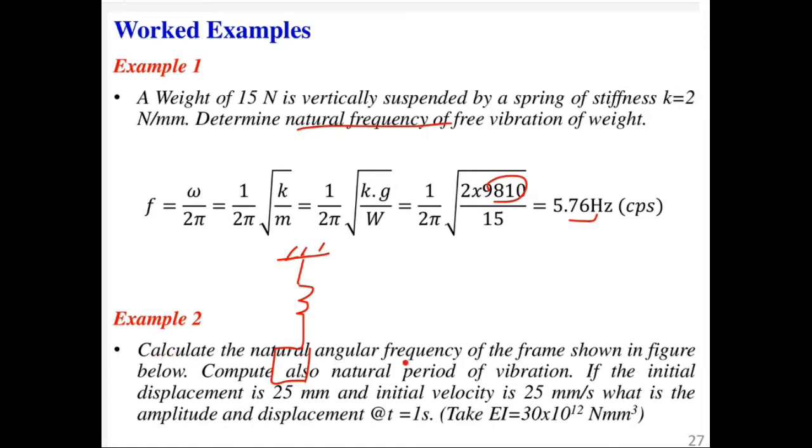Example 2: Calculate the natural angular frequency for the frame shown in the figure. Also calculate the natural period of vibration. Given the initial condition displacement and velocity, what is the amplitude and displacement at t equals 1 second? Take EI equals 30×10^12 newton millimeter squared.